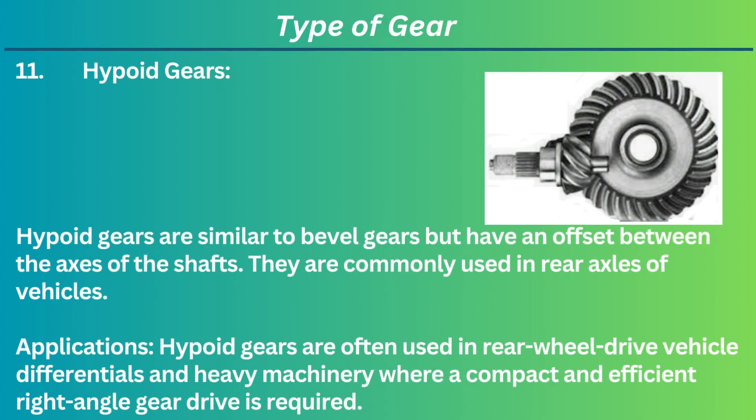11. Hypoid gears. Hypoid gears are similar to bevel gears but have an offset between the axes of the shafts. They are commonly used in rear axles of vehicles. Applications: Hypoid gears are often used in rear-wheel-drive vehicle differentials and heavy machinery where a compact and efficient right-angle gear drive is required.